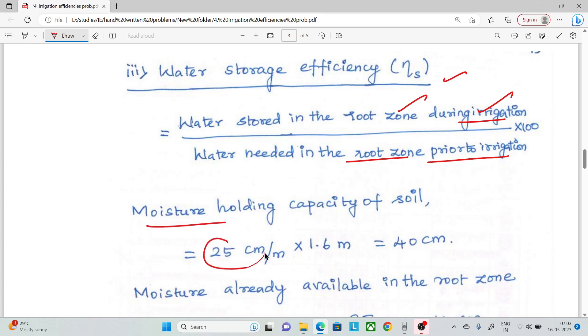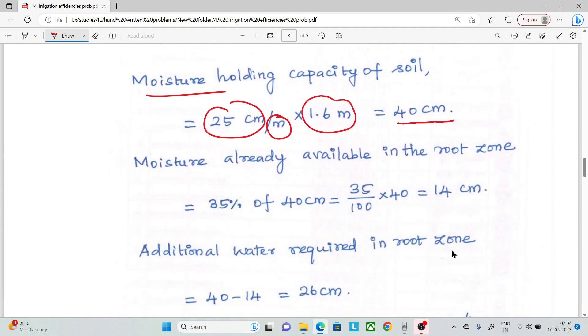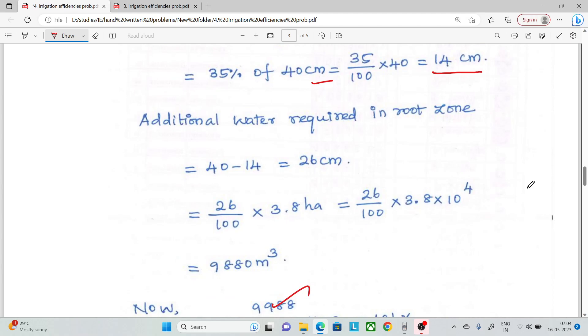The moisture holding capacity is 25 cm per meter. That is 1.6 meters. We have to calculate for the root zone. The moisture is already available in the root zone - we can see how much moisture is there. 35% of 40 cm. It is 1.6 meter depth of the root zone. In the soil, it is 14 cm. We need to calculate what's needed in the root zone.